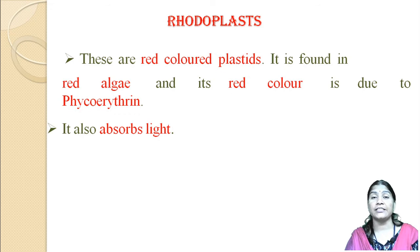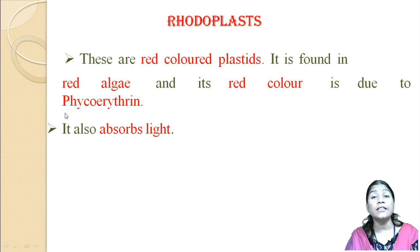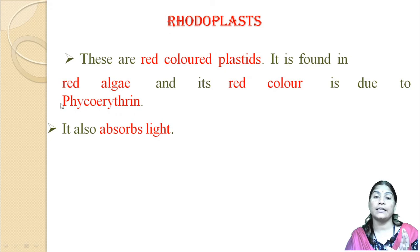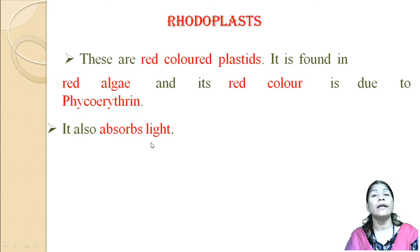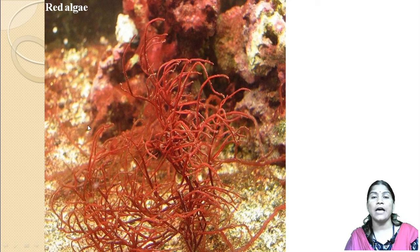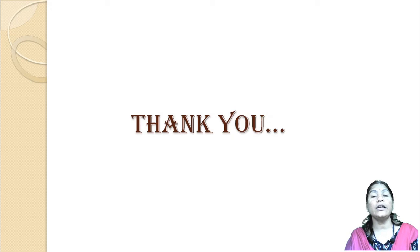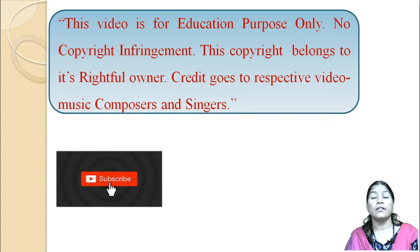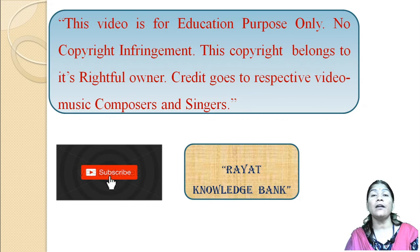Rhodoplasts are the red-colored plastids which form in red algae (Rhodophyta). The red color is due to presence of the pigment phycoerythrin, which absorbs light. Today we learned about the types of plastids — the chromoplast, which has color pigment, the phaeoplast found in brown algae, and the rhodoplast found in red algae.